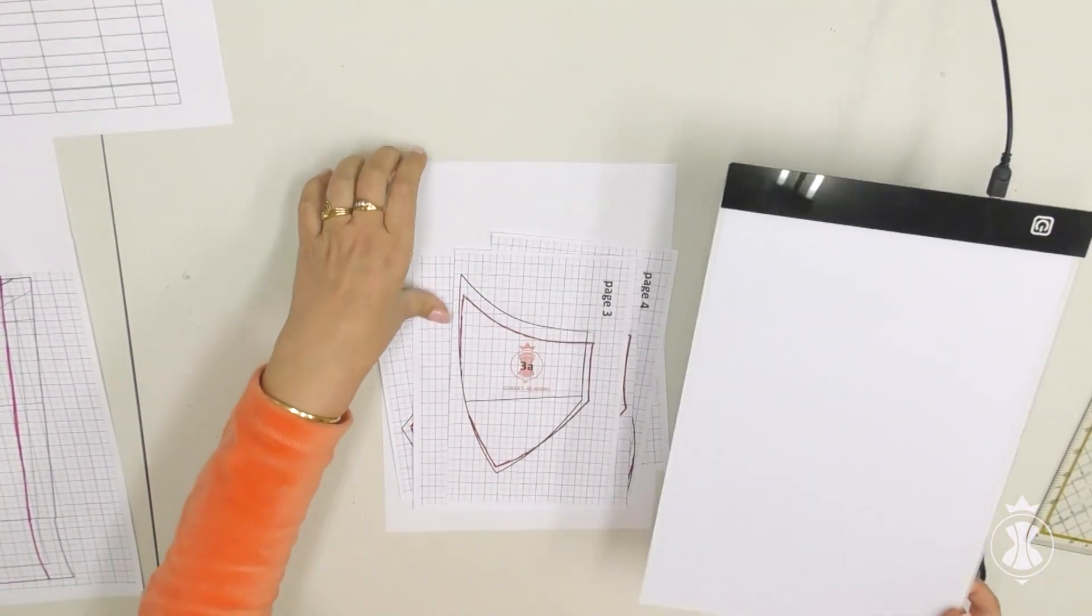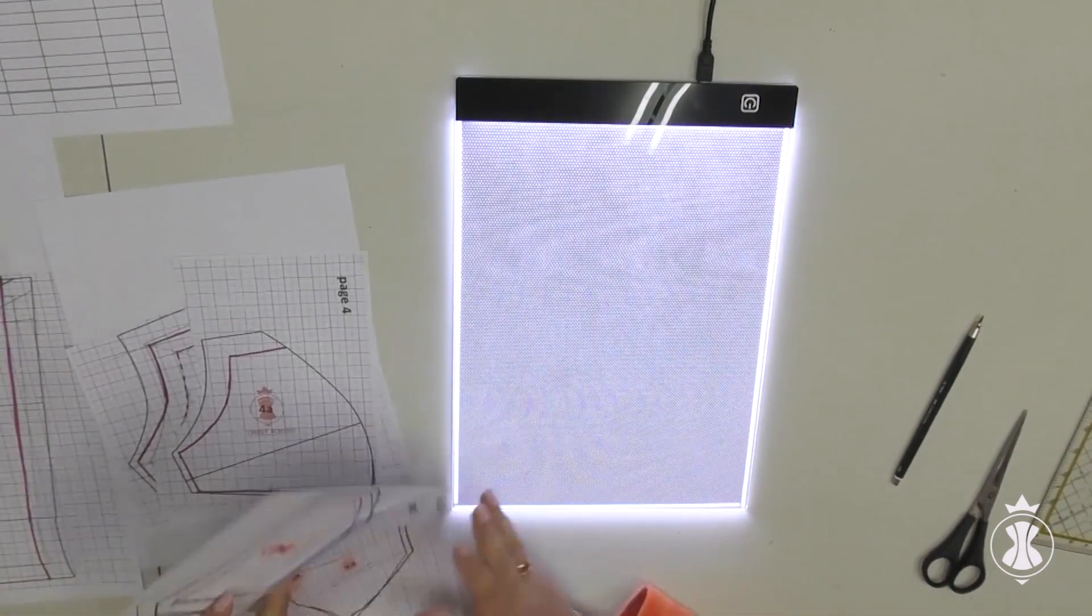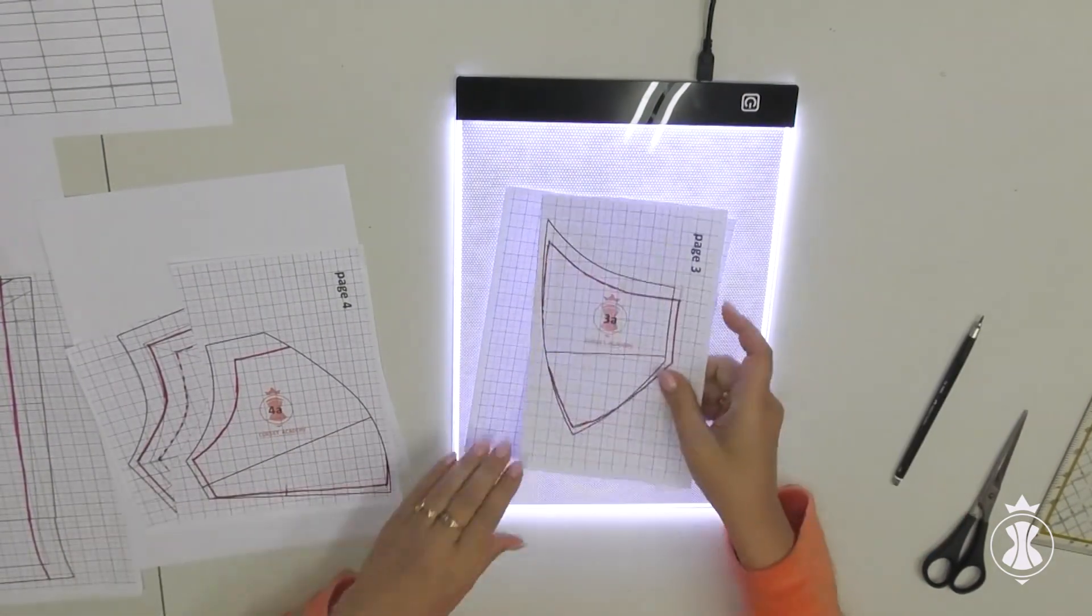Before continuing with the back patterns, I traced the altered cup patterns without seam allowance with a light box.